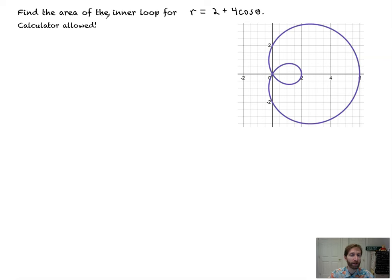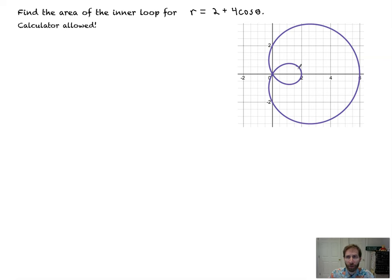In this one it says find the area of the inner loop. We're allowed to use our calculator, and we're going to find the inner loop of 2 plus 4 cosine theta. To figure that out, we need to first know where the inner loop starts and where it stops. I'm going to show you two different integrals that would get you the same exact answer.